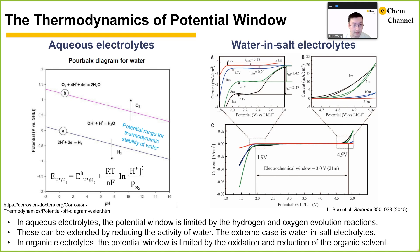In organic electrolytes, the potential window is limited by the oxidation and reduction of the organic solvent. Similar to the aqueous case, the potential window is affected by the electrolyte's salt. High concentration electrolytes and locally high concentration electrolytes are still of interest to many researchers.